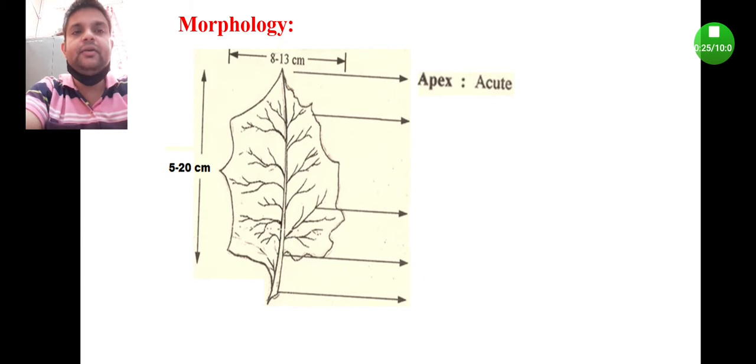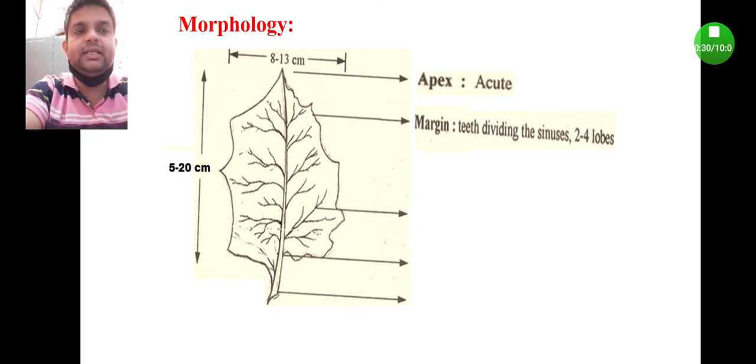First is the apex which is acute, very sharp at the topmost part. The margin refers to the edges of the leaf, and the teeth dividing the margin has 2 to 4 lobes. You can find that there are lobes present, so it is not uniform.